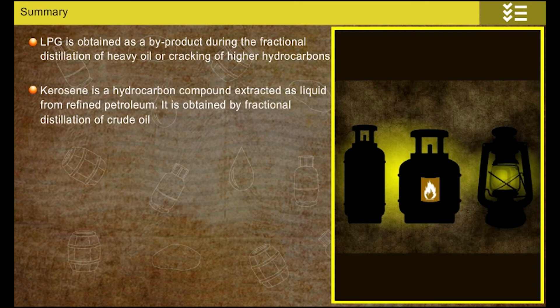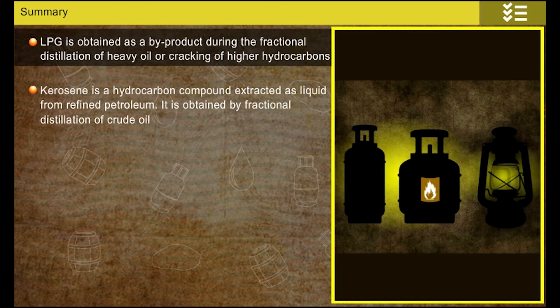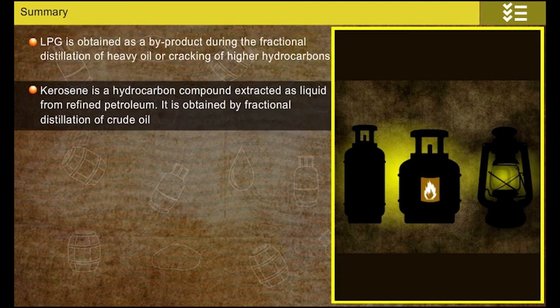Summary: In this lesson, you have learnt that LPG is obtained as a by-product during the fractional distillation of heavy oil or cracking of higher hydrocarbons. Kerosene is a hydrocarbon compound extracted as liquid from refined petroleum, obtained by fractional distillation of crude oil.